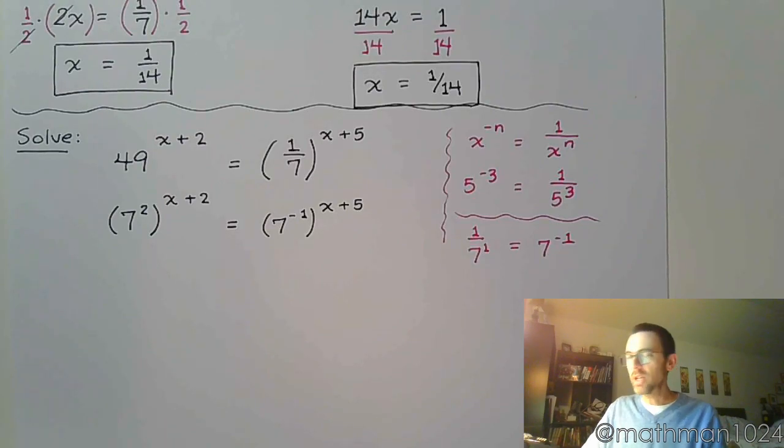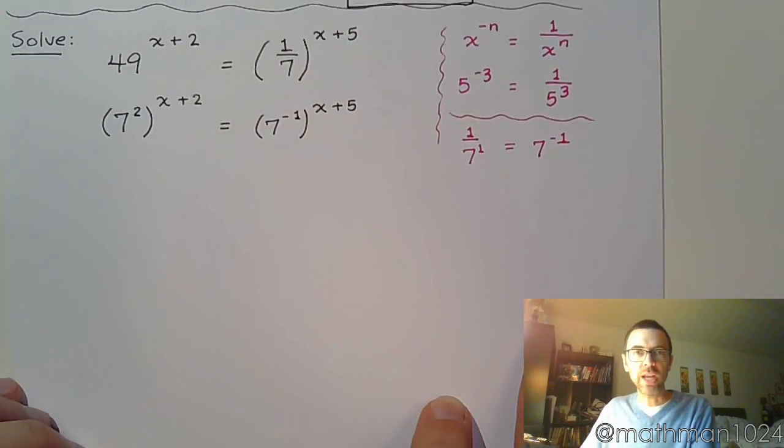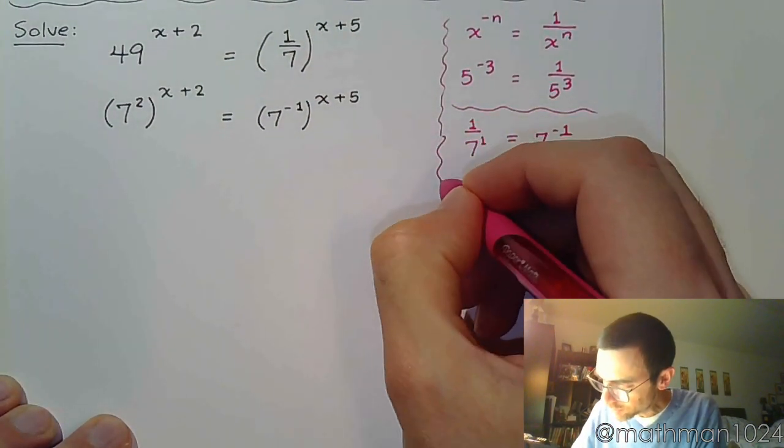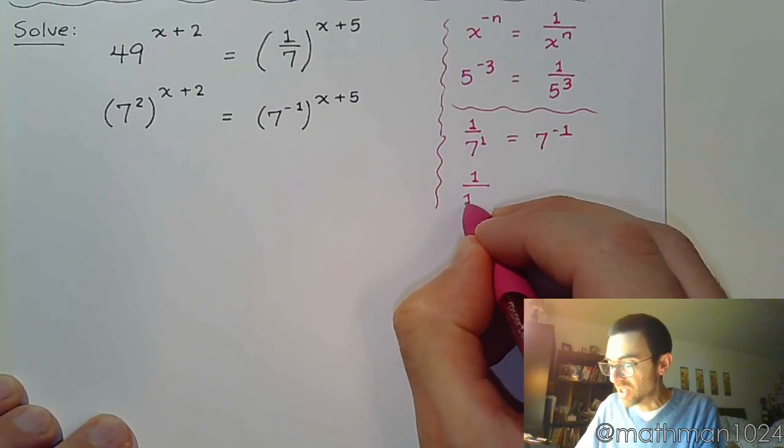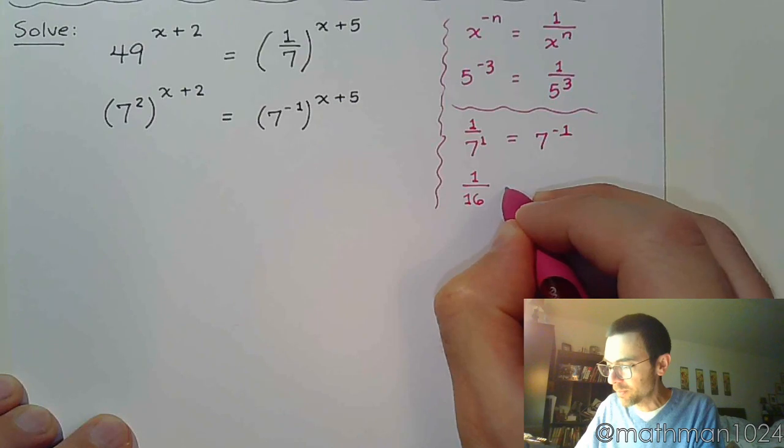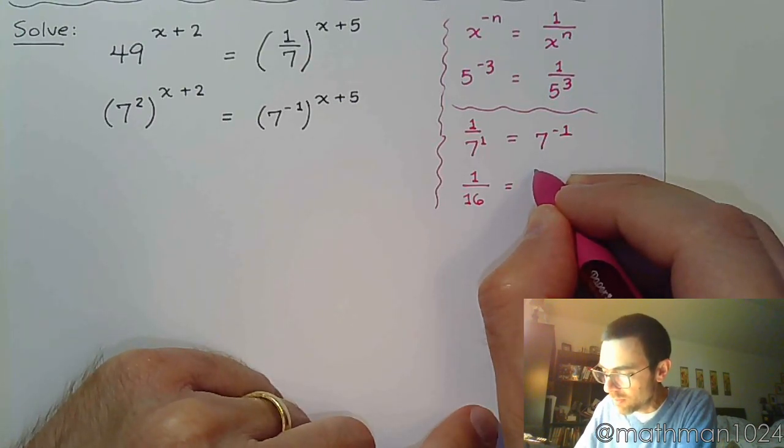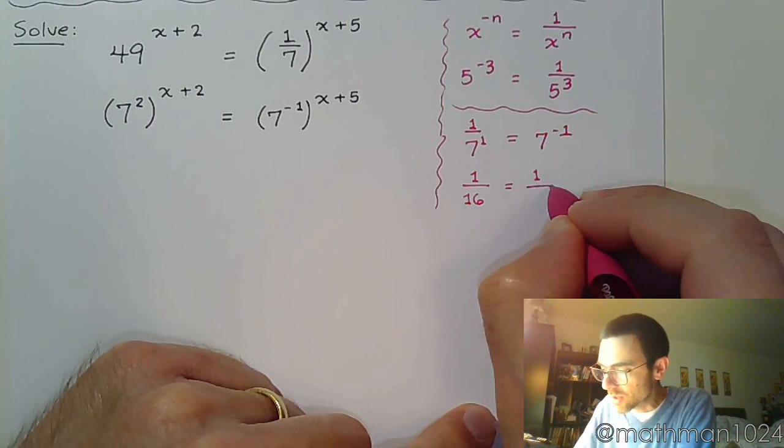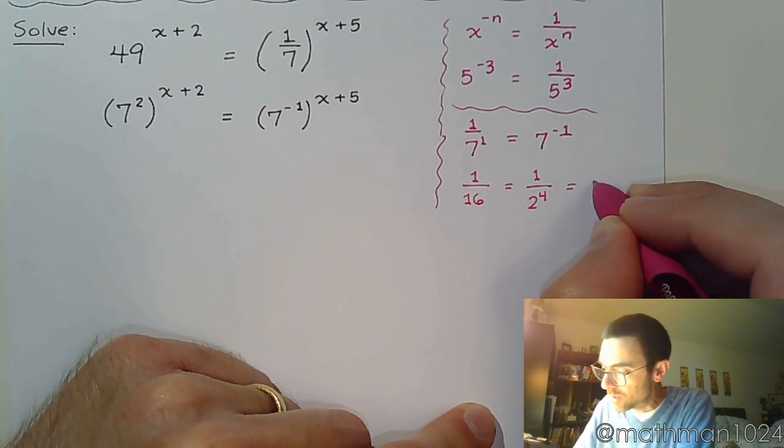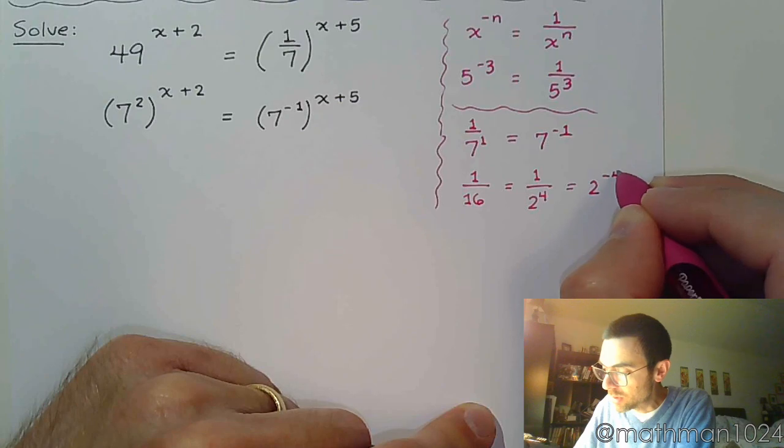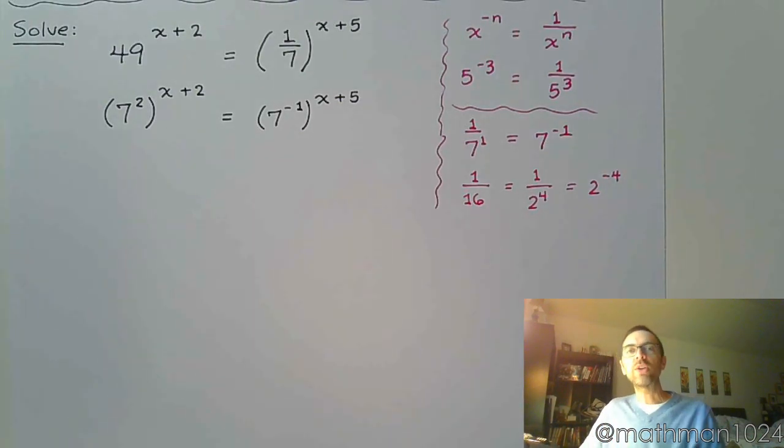So keeping that in mind, just another quick example to make sure we understand how the negative powers work. If I wrote 1 over 16, well, we can understand that this is 1 over 2 to the 4th power, which means 2 to the negative 4th. So if we had to rewrite this as a base of 2, that's what you would do.